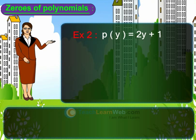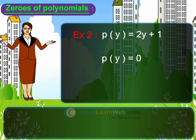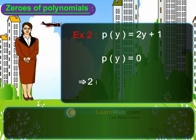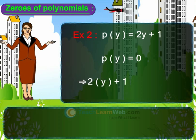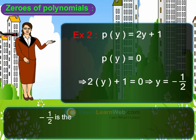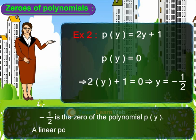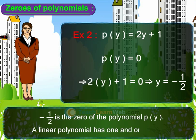Second example: p of y is equal to 2y plus 1. Finding the zero of p of y is the same as equating p of y equal to 0. So 2y plus 1 is equal to 0, which gives y is equal to negative one-half. So negative one-half is the zero of the polynomial p of y. We can say that a linear polynomial has one and only one zero.